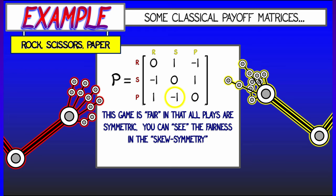Now, this game is fair in that all plays are sort of symmetric, and you can see that in the structure of this matrix. This matrix is what we call a skew-symmetric matrix. That is, P transpose is minus P. So it's not quite symmetric, it's anti-symmetric or skew-symmetric.